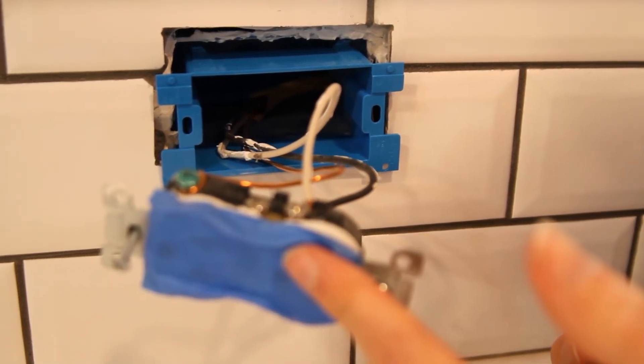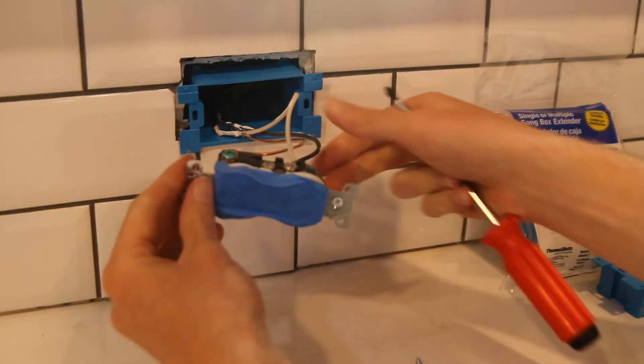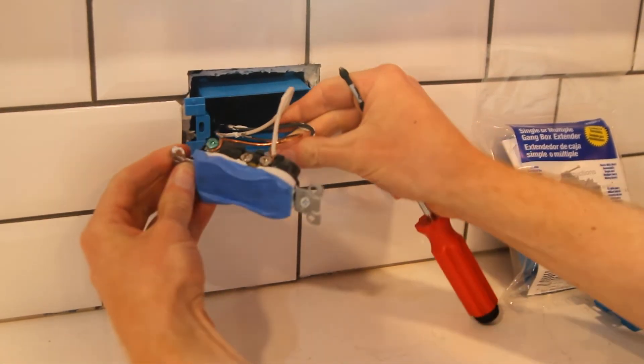So I've already turned off this outlet, so let's go ahead and install it. We'll just kind of fold the wires like we normally do.